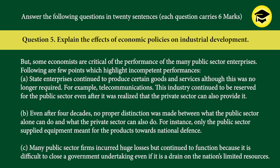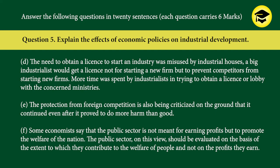However, some economists are critical of the performance of many public sector enterprises. A) State enterprises continued to produce certain goods and services although this was no longer required — for example, telecommunications continued to be reserved for the public sector even after it was realized the private sector could also provide it. B) Even after four decades, no proper distinction was made between what the public sector alone can do and what the private sector can also do — for instance, only the public sector supplied equipment for national defense. C) Many public sector firms incurred huge losses but continued to function because it is difficult to close a government undertaking even if it is a drain on the nation's limited resources.